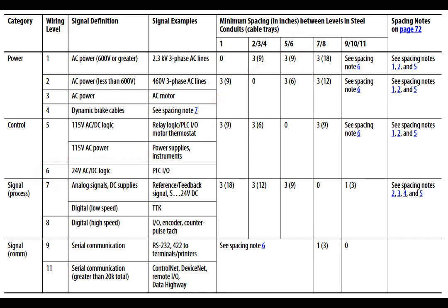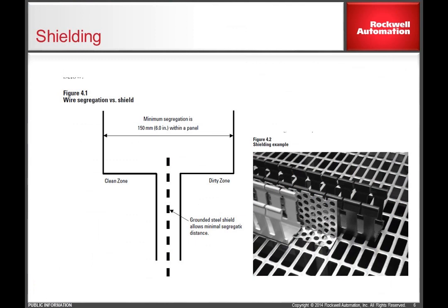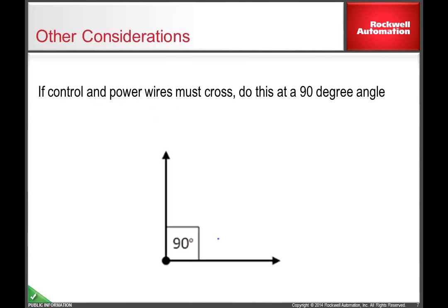In many cases, devices such as drives do not allow for these spacing restrictions to be met. In these cases, route the wire as far as possible and try to maintain these distances as best as you can. In some cases, it may be extremely difficult or impossible to meet the recommended spacing considerations. In these cases, it is recommended to use grounded shielding devices within the enclosure such as the Panduit shield shown, or use shielded or armored shielded cables. If cables of different wiring levels must cross, do this at a 90 degree angle. This will minimize any induced voltages from one cable to the other.